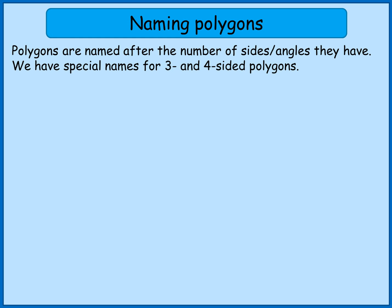Polygons are named after the number of sides or angles they have, and remember that the number of sides and the number of angles is the same. We've got special names for three and four sided polygons, and you'll actually already know these.